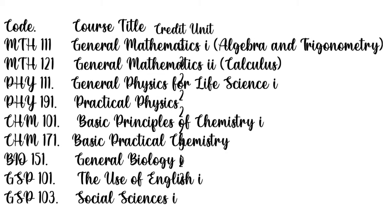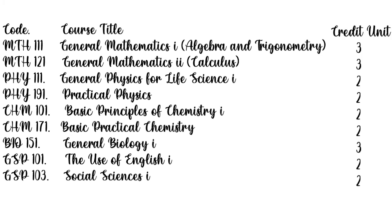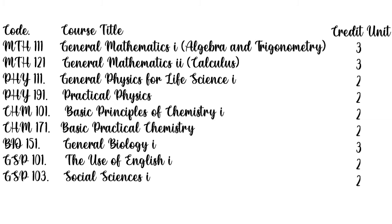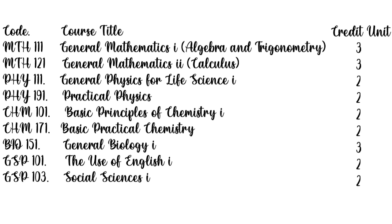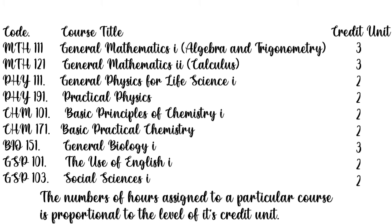Now each of these courses have their own credit units. Math 111 has a credit unit of 3, Math 121 has a credit unit of 3, Physics 111 has a credit unit of 2, GST 101 has a credit unit of 2, GST 103 has a credit unit of 2. This credit unit is actually associated with the number of hours that you spend in class. So for instance Math 111 has a credit unit of 3 — you spend 3 hours in class every week. That is how they calculate credit hours.